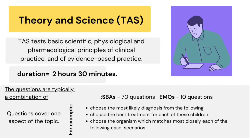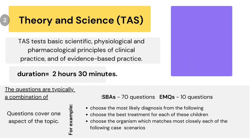The second paper of Part 1 is Theory and Science. Theory and Science tests basic scientific, physiological, and pharmacological principles of clinical practice and of evidence-based practice. The time duration is 2 hours and 30 minutes. Questions are typically a combination of Single Best Answer, 70 questions, and Extended Matching Questions, 10 questions. Questions cover one aspect of the topic — for example, choose the most likely diagnosis, choose the best treatment, or choose the organism which matches most closely each of the following case scenarios.